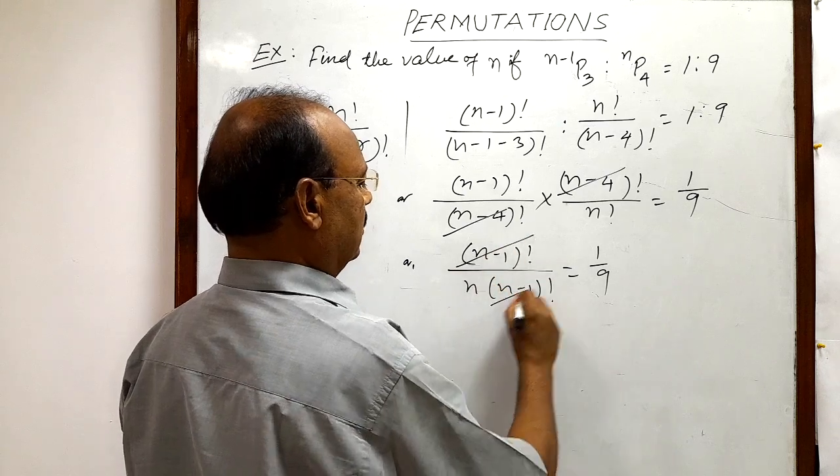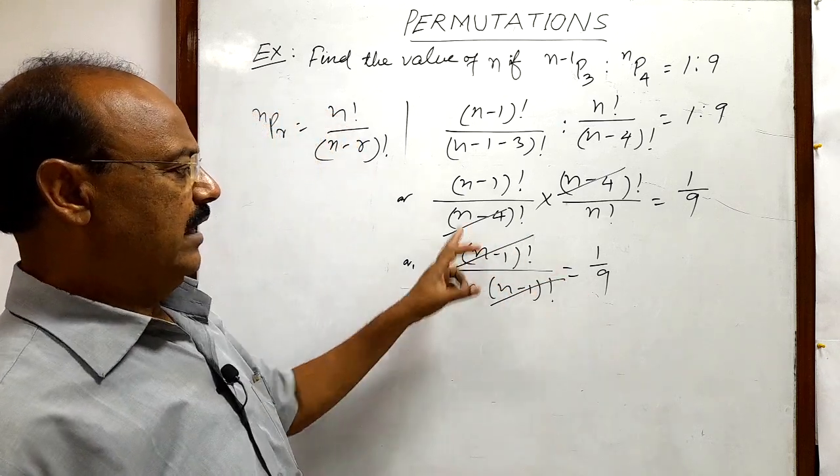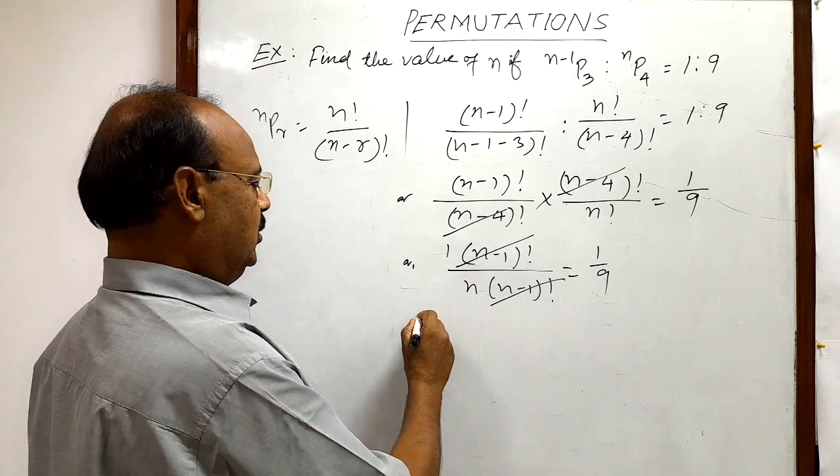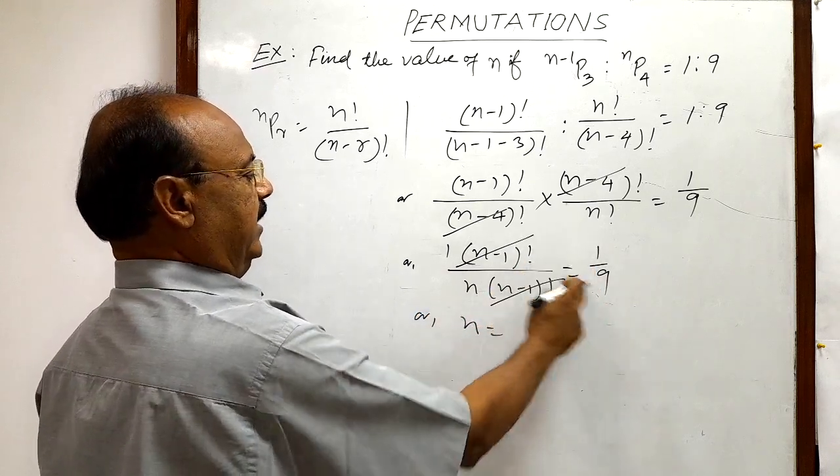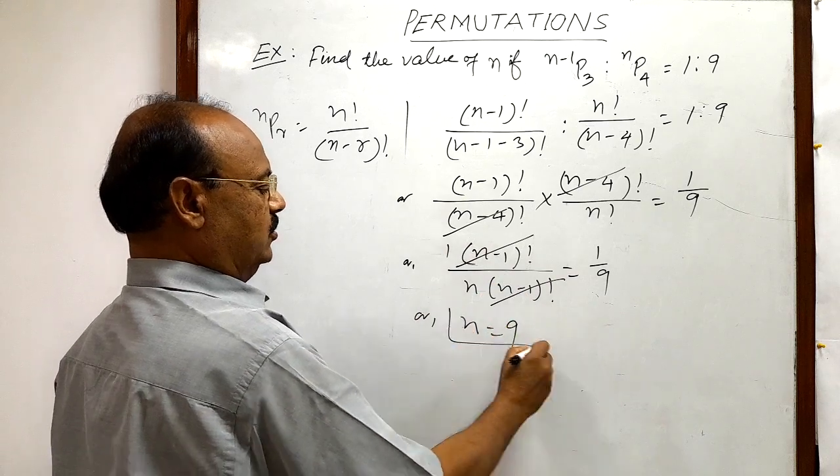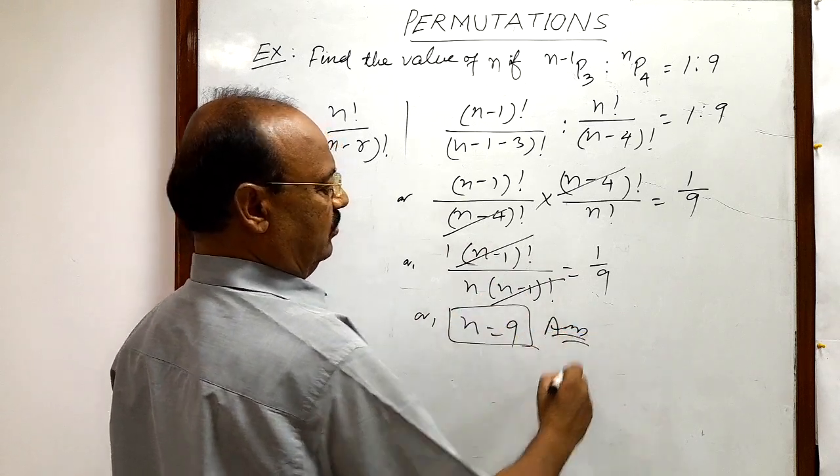Here (n-1)! will be cancelled out, and by cross multiplication we will get the value of n. n × 1 is n and 9 × 1 is 9. So this is the required value of n, which is the answer.